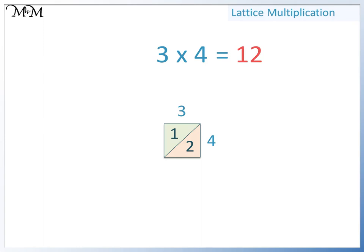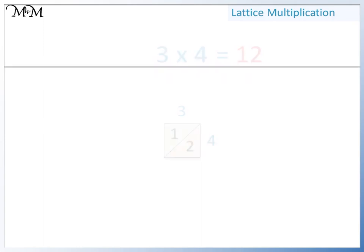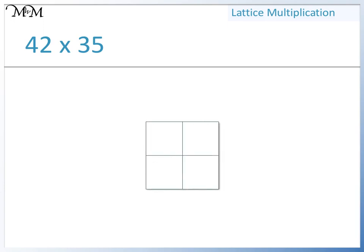Now we'll look at multiplying two two-digit numbers using the lattice method. Here we have 42 times 35. Both numbers are made up of two digits, so we draw a 2 by 2 grid. We write the numbers like so, then draw diagonal straight lines through the corners. We can now use the lattice to multiply each of the digits of 42 by each of the digits of 35.